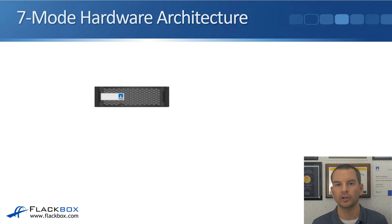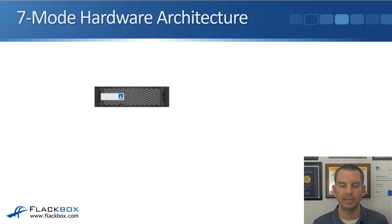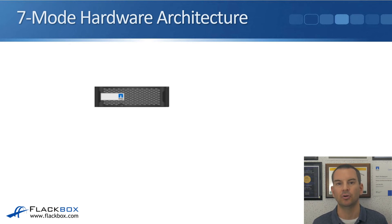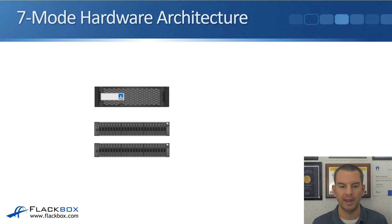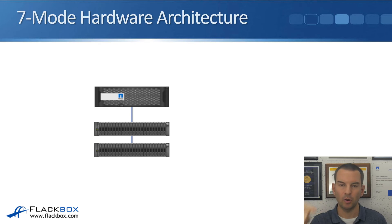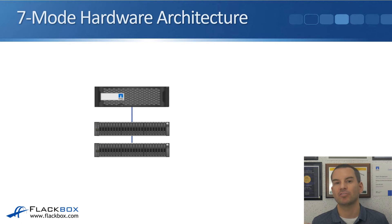The controller, also known as the head, is the brains of the system — that's where the CPU, RAM, and the operating system live. On the controller there are physical ports that connect out to clients and to disk shelves. With some models you can have internal disk shelves in the chassis, and you can expand capacity by adding external disk shelves. The connection to disk shelves uses SAS and is daisy-chained: a port on the controller connects to the back of the first disk shelf, then daisy-chains down the stack. The maximum number of shelves per stack depends on the controller and shelf model.